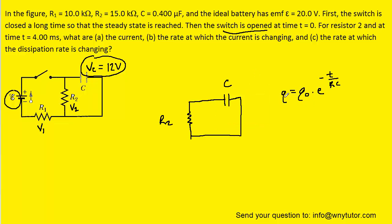In the discharging equation, we have the charge at a particular time Q, the original charge Q0, the time, and the resistance. We multiply both sides by capacitance C, recalling that Q·C equals voltage and Q0·C equals the initial voltage. We've determined that the initial voltage on the capacitor is 12 volts — the voltage that developed after the switch was closed for a long period of time. The moment the switch is opened, that is still how many volts are initially present on the capacitor.